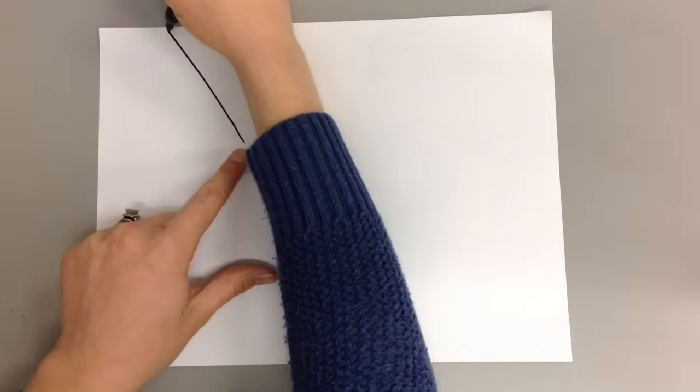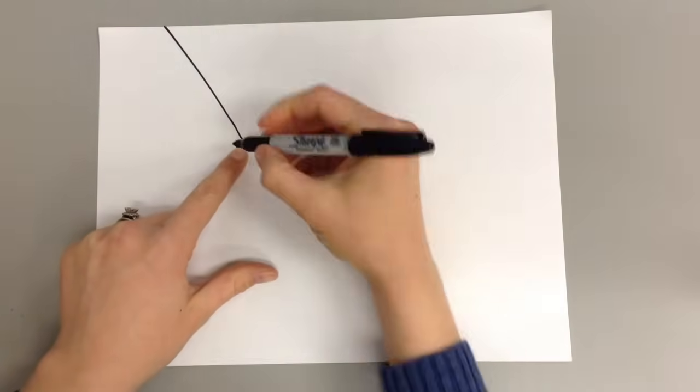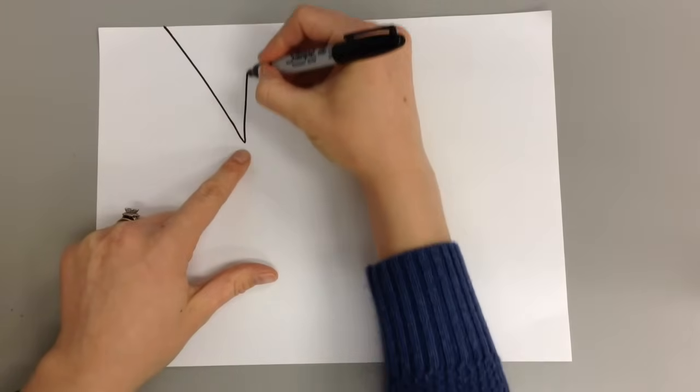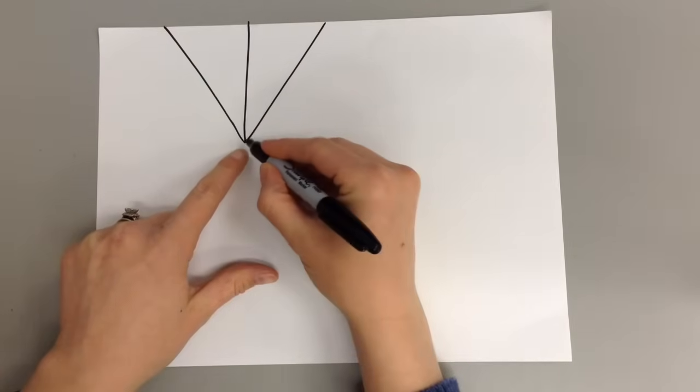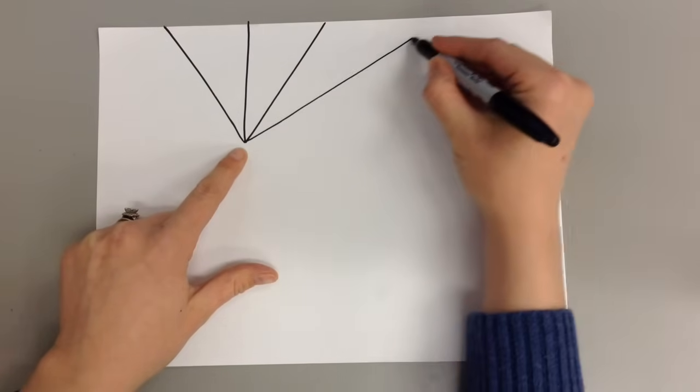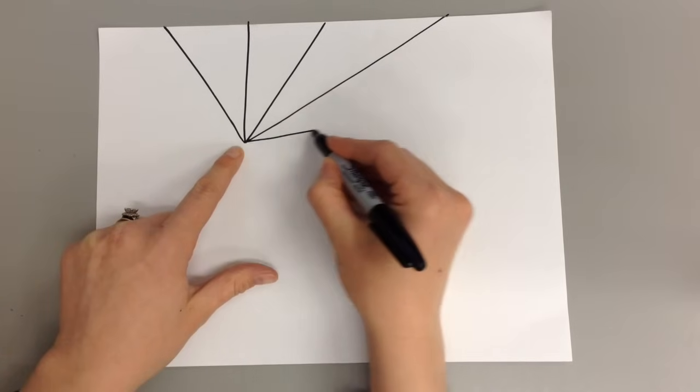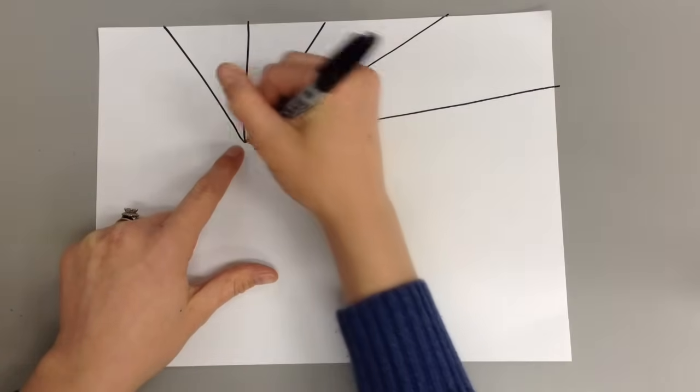We're going to make our lines go all the way to the edge of the page. We want to keep them straight. And we're going to change the direction ever so slightly so each line is a different angle and goes all the way off the page.